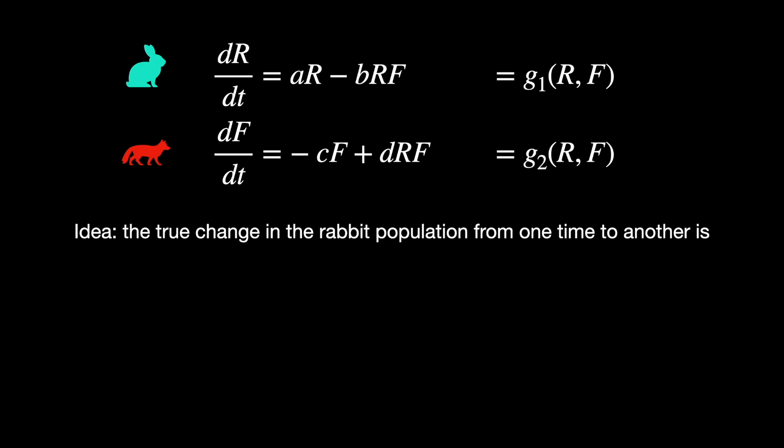Euler's method is an algorithm that allows us to approximate the true solution to this pair of differential equations. So what we're about to do is an estimate. The idea is that the true change in the rabbit population from one time to another could be written as the new population is the old population plus how much it changed. That is literally a measure of how much the rabbits have changed from one moment to the next, where ΔR is that change.